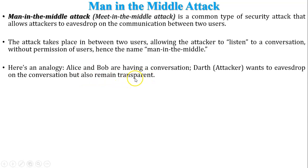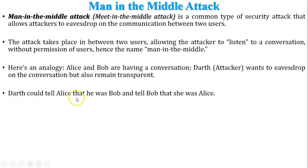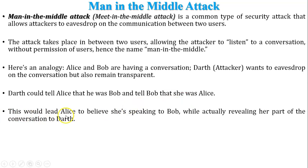Darth could tell Alice that he was Bob, and tell Bob that she was Alice — giving the identity of Bob to Alice, and the identity of Alice to Bob during communication. This leads Alice to believe she is speaking to Bob while actually revealing her part of the conversation to Darth. Whenever Alice tries to send a message to Bob, Darth captures, reads, and modifies the message, then forwards it to Bob. When Bob replies, Darth again captures, modifies, and sends that reply to Alice.